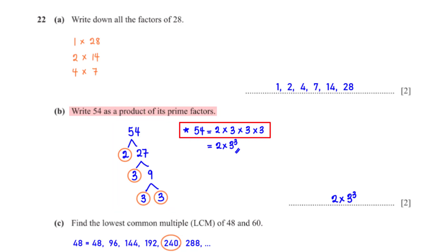So we have 54 equals 2 times 3 times 3 times 3. We can leave this as our final answer. Or since 3 appears 3 times, we can rewrite it as 2 times 3 cubed.